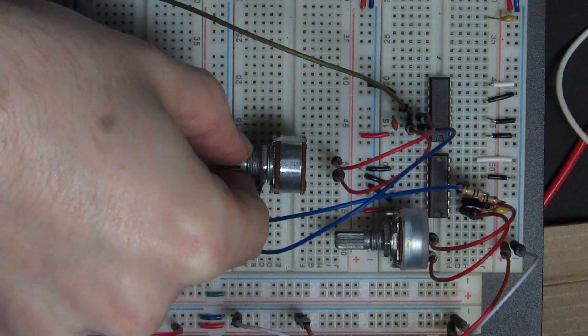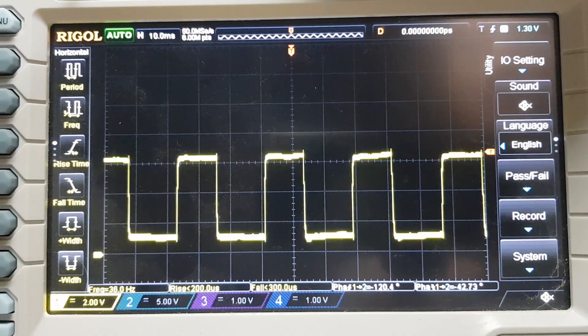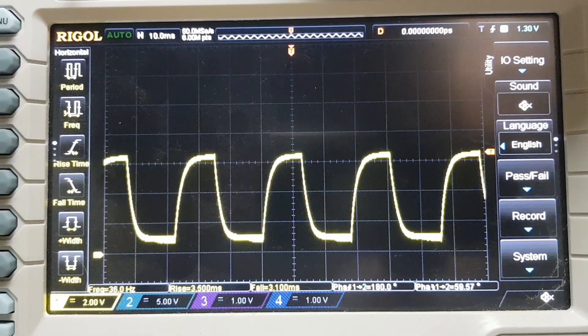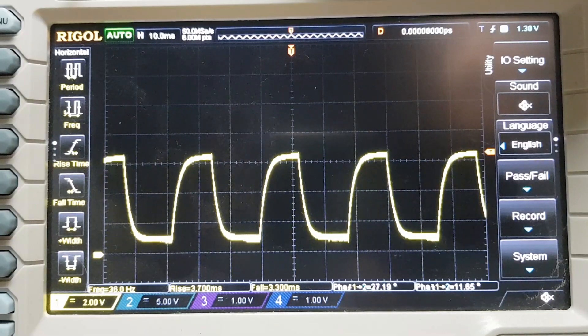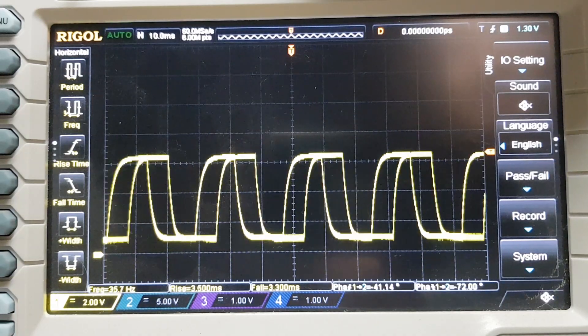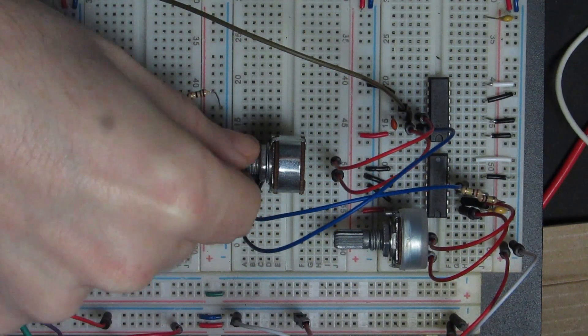And then as we filter it, it becomes more like a triangle wave. Those high frequencies are filtered out. You can see on the scope that the amplitude isn't changing.